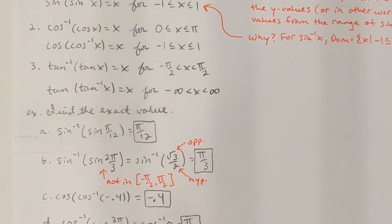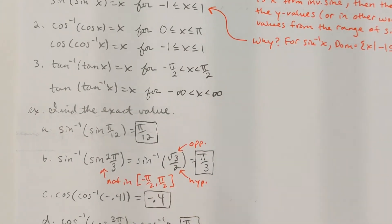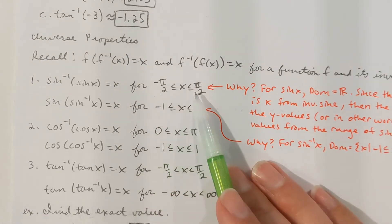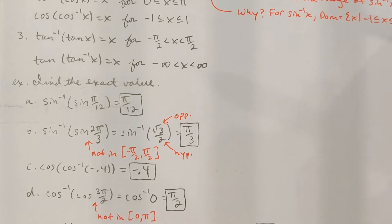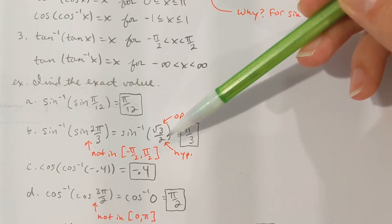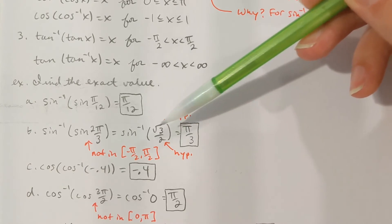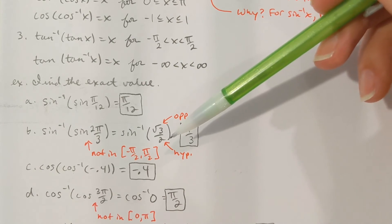Sine inverse of sine of two pi over three is not two pi over three. Some students will make that mistake because they think it's just x, and they see x is two pi over three. But two pi over three is not between negative pi over two and pi over two, so more work is going to be required here. Sine of two pi over three — well, two pi over three would be an angle in quadrant two, and I'd be working with a 30-60-90 right triangle, with a 60-degree angle in quadrant two. Opposite the 60 would be root three, the hypotenuse would be two, and the adjacent side would be negative one. So sine of two pi over three would be root three over two.